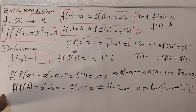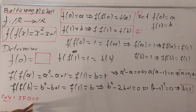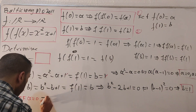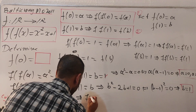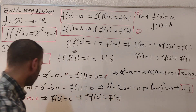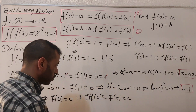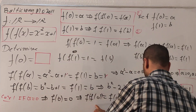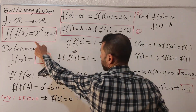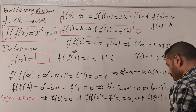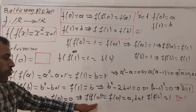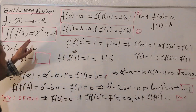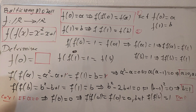Let's go through two cases. Case one: if a equals zero, then f of zero equals zero, which implies f of f of zero equals f of zero equals zero. But we know f of f of zero equals one by the original function. This is a contradiction — it's impossible — so a equals zero is ruled out.